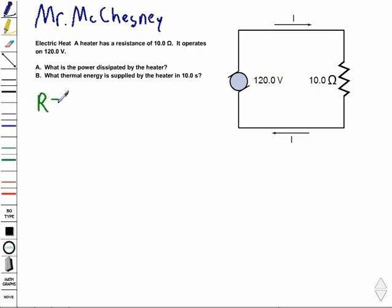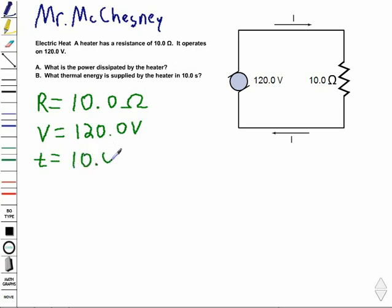We know we've got a resistor that is 10.0 ohms, and we use the Greek letter omega to show ohms. We've got a voltage of 120.0 volts. And then later on, the question asks how much power is going to provide how much energy for the heater in 10 seconds. So we also know a time of 10 seconds.